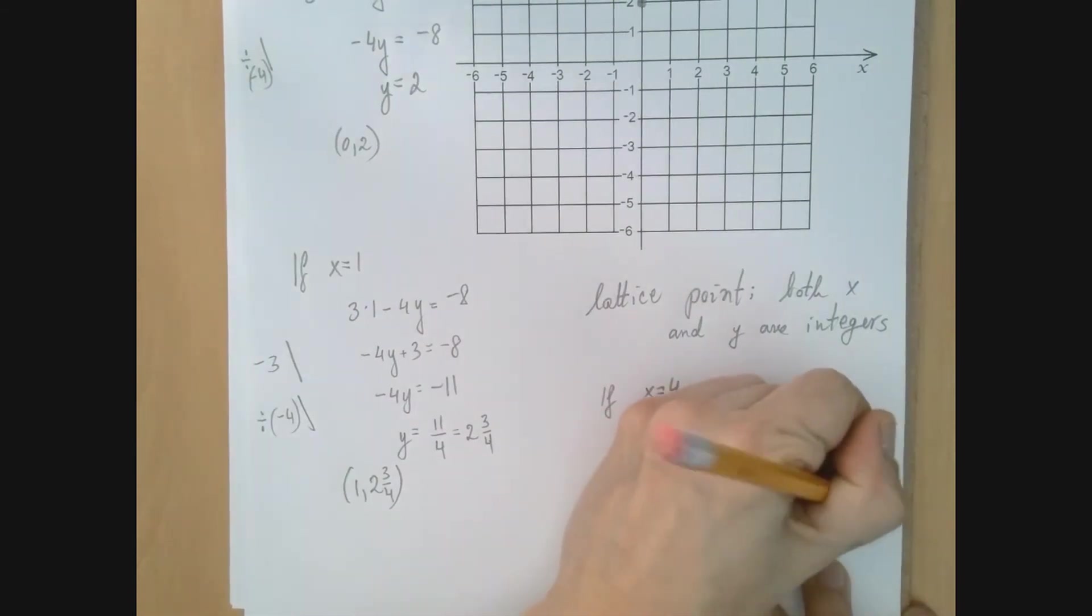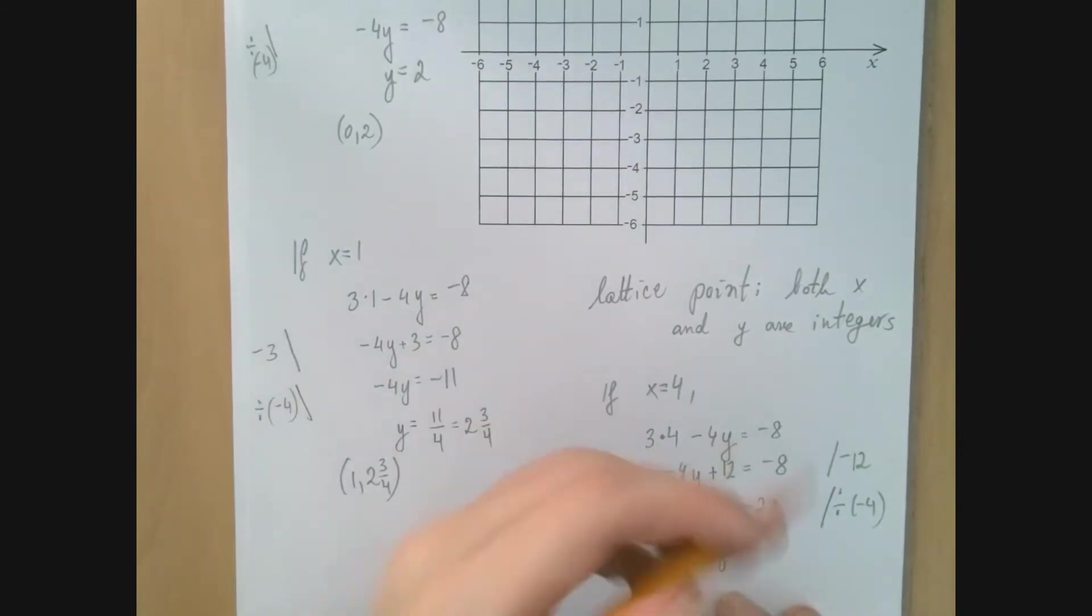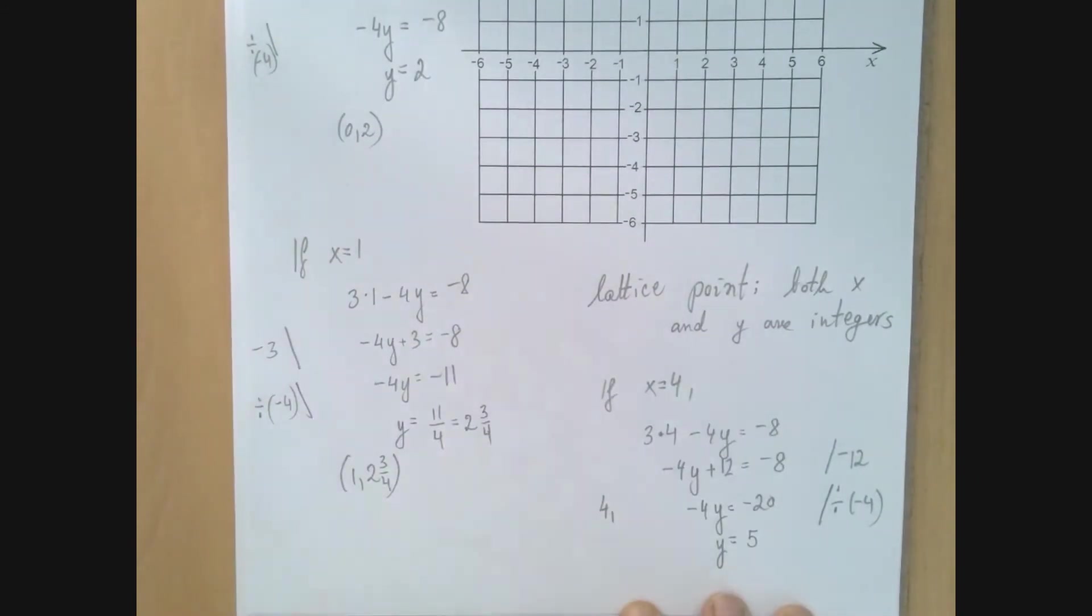then we get negative 4y equals negative 20. And now we divide by negative 4. Negative 20 divided by negative 4 is plus 5. So y equals 5. So we found the point (4, 5).